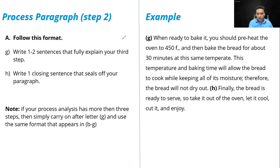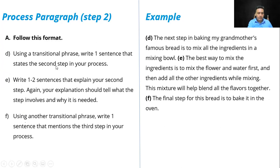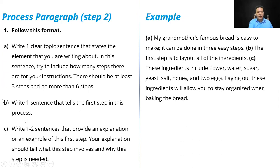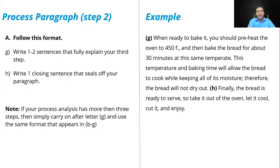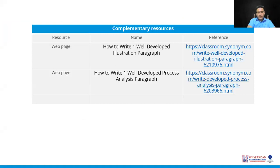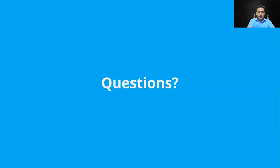So what we have in letters D and E — we are repeating the same process regardless of how many steps your process has. It can be six. You are going to repeat what it says in letters D and E, because it is the same as letters B and C. The difference is that it is a different step. If you have four steps, you repeat the same. If you have five steps, you repeat the same. Do you have any questions?